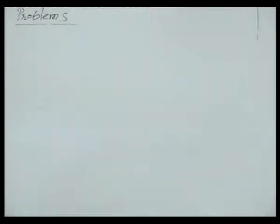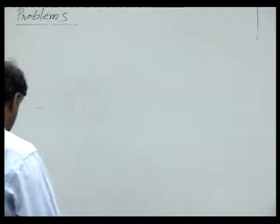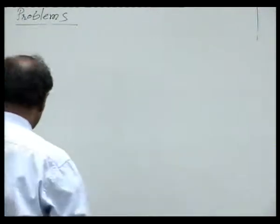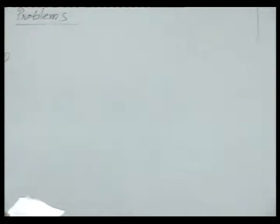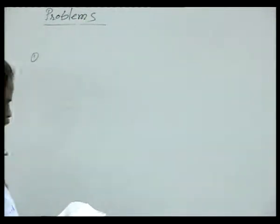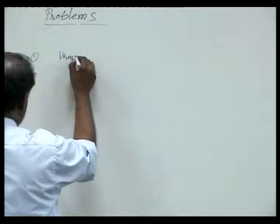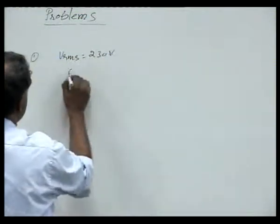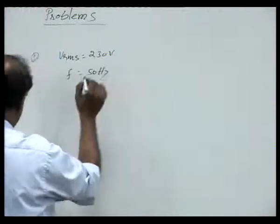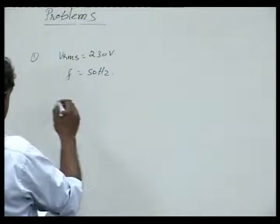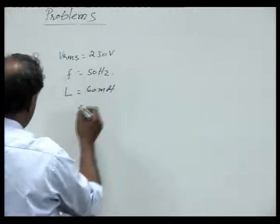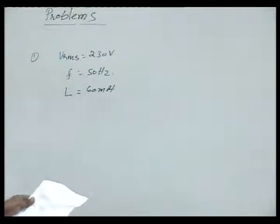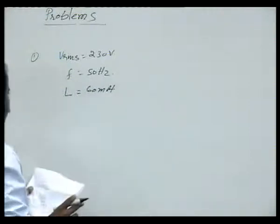So we can have another problem. It is given: find the current that will flow through a coil of negligible resistance and inductance of 60 millihenries when connected to 230 volts — that means RMS voltage is 230 volts and frequency F is given as 50 hertz. This is a single phase power supply and inductance value is 60 millihenries with negligible resistance, meaning it is a purely pure inductor.